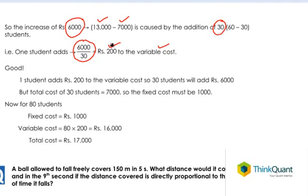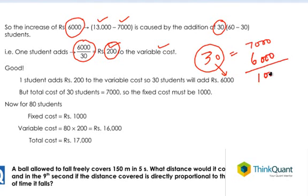So one student adds Rs. 200 to the variable cost. Now let's get back because we know that the total cost of 30 students is equal to 7,000. Now the variable cost of 30 students is equal to 30 into 200, which is equal to 6,000. So that means the fixed cost is equal to 1,000 rupees.